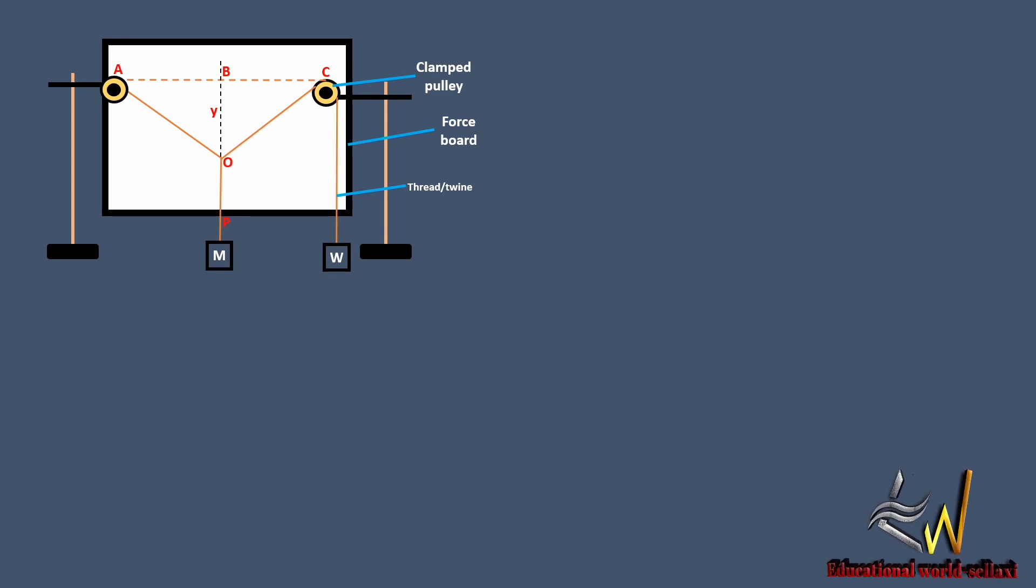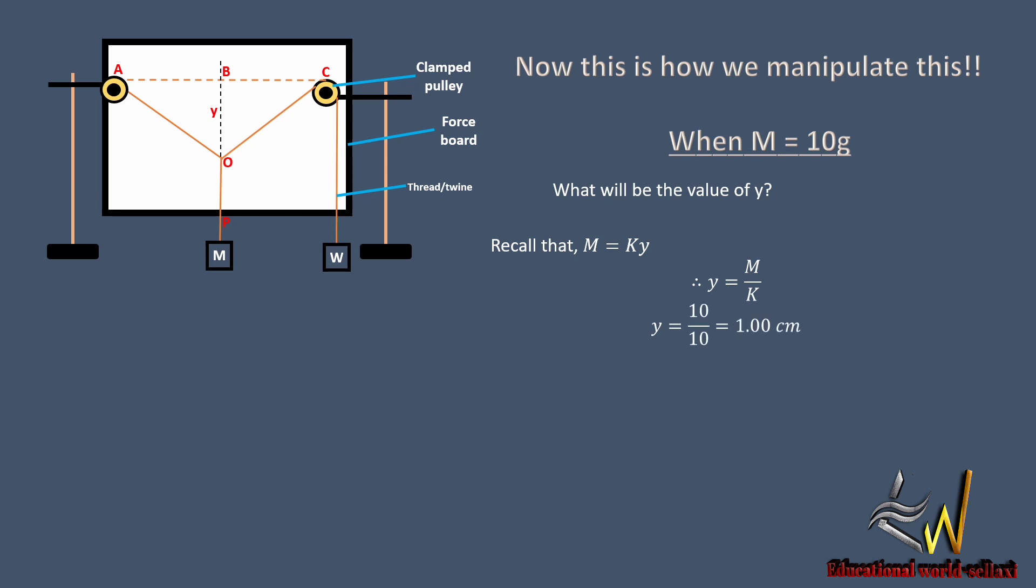Now we move ahead. This is how we manipulate this practical. When M is equal to 10 grams, what will be the value of y? Recall that M equals ky, so y in this case will be M over k. Substituting the values, we now have 10 over 10 which equals 1 cm, so the displacement y equals 1 cm.